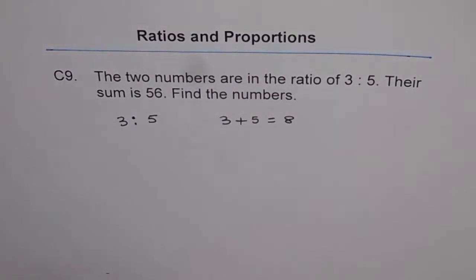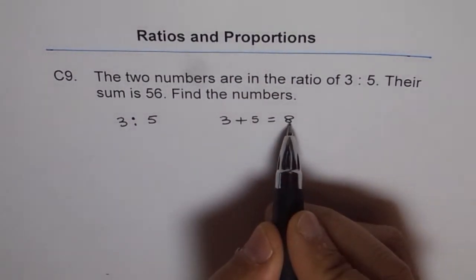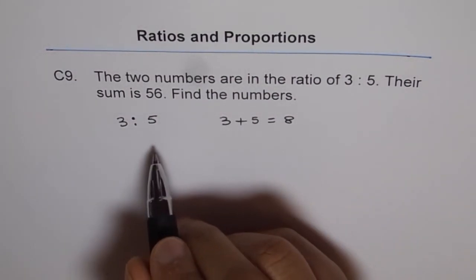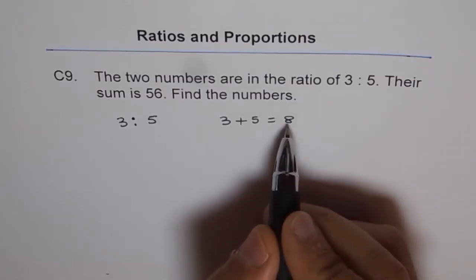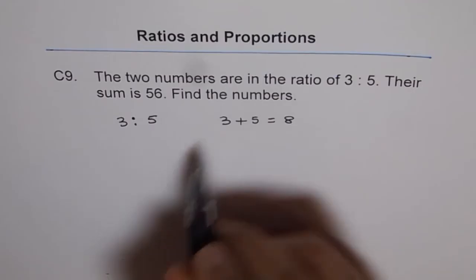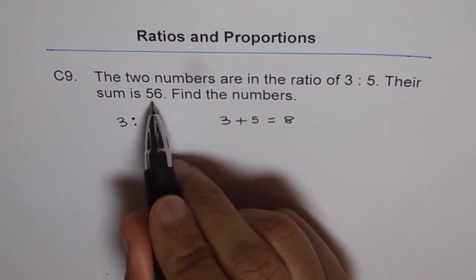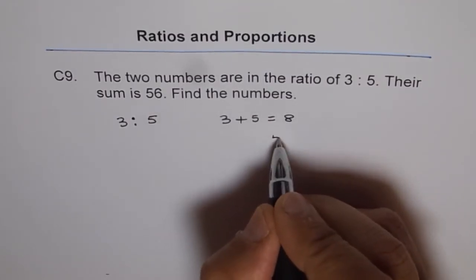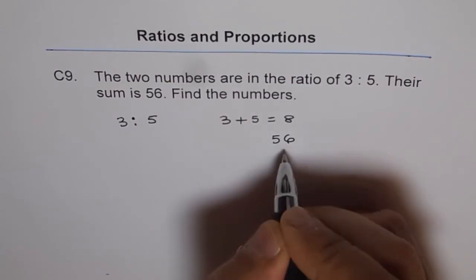Okay, now if 8 is the sum of your numbers, then the two numbers are 3 and 5. But what is your sum? Sum is 56, not 8.